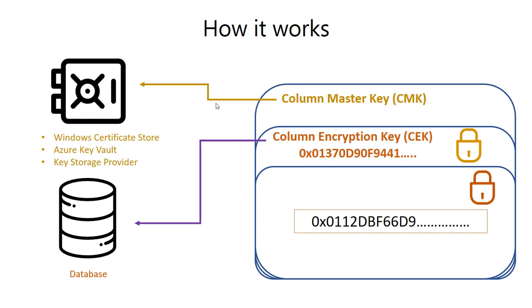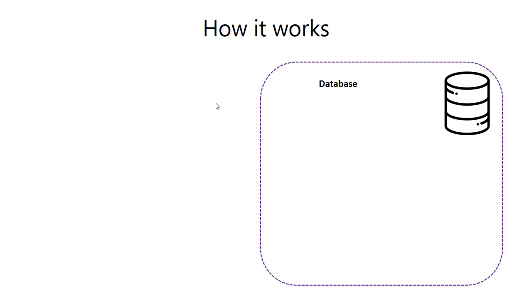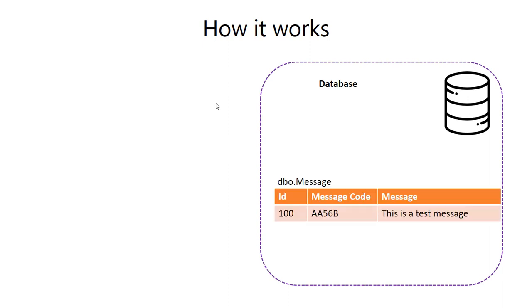Let's see how encryption and decryption works. I have a database with a table called dbo.message that has two columns: message code and message. I want to make sure both columns are encrypted using Always Encrypted, but I want to be able to search on message code. In that case, I have to use Deterministic encryption for message code and Randomize for message.